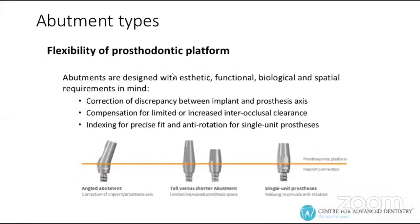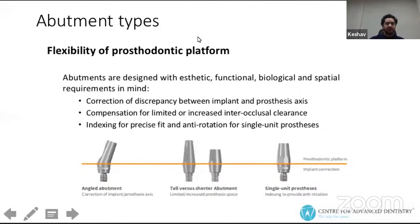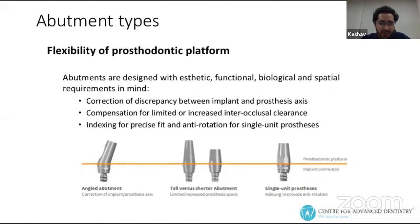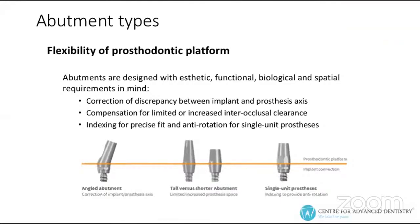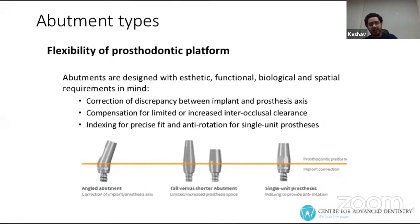Flexibility of the prosthodontic platform: abutments are designed with aesthetic, functional, biological, and spatial requirements in mind. They can be used for the correction of discrepancies between the prosthesis axis and the implants. They can compensate for limited or increased interocclusal clearance, which can be done with the different heights of abutments that are available.